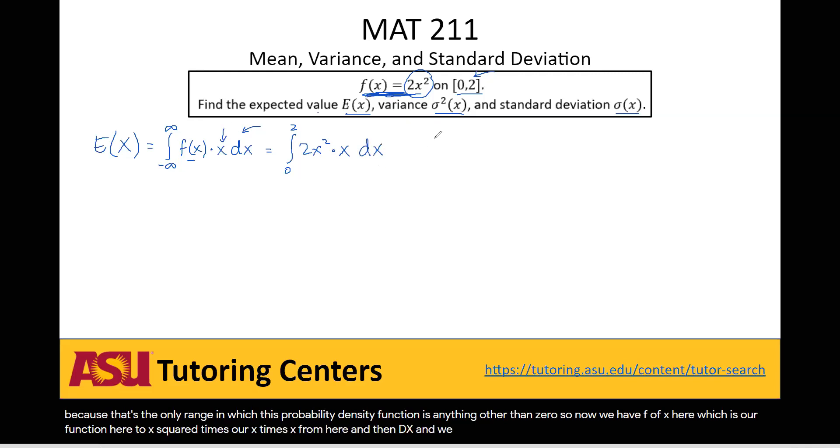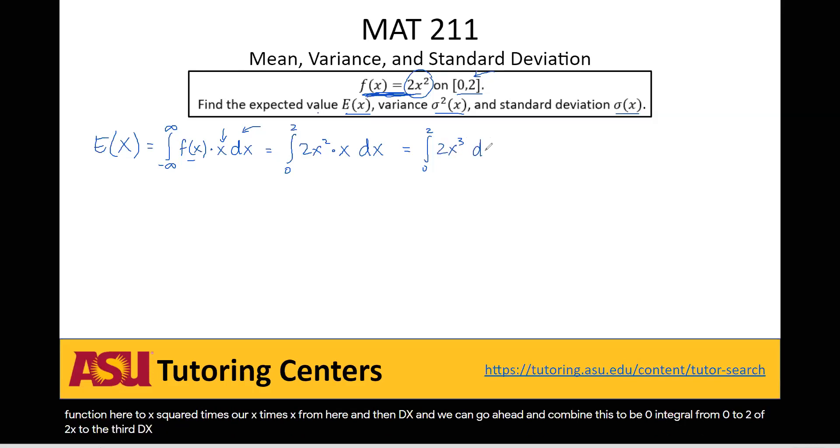And we can go ahead and combine this to be integral from 0 to 2 of 2x to the third dx. So we're just combining the x squared and the x here.